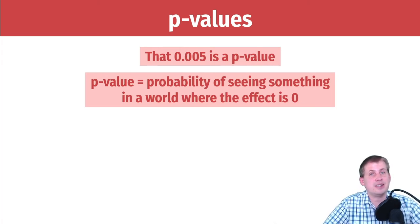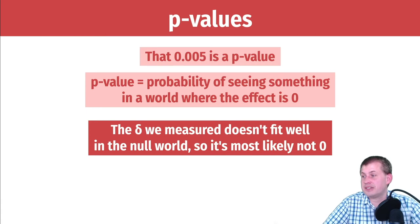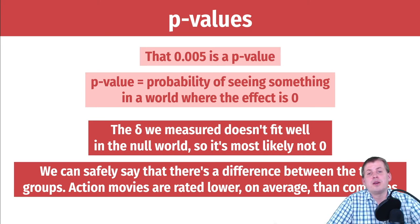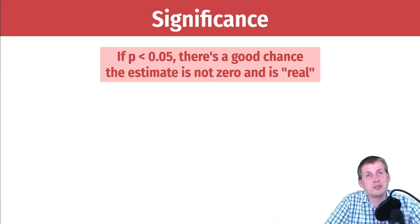Seeing that red line way out there means what we've measured is most likely not zero — the difference between the two groups probably exists. The p-value of 0.005 measures the probability of seeing that delta in a world where the effect is actually zero. In our situation, that delta doesn't fit well in the null world, so it's most likely an actual number. We can safely say action movies are rated lower on average than comedies — we don't know exactly how much, but it's not zero.